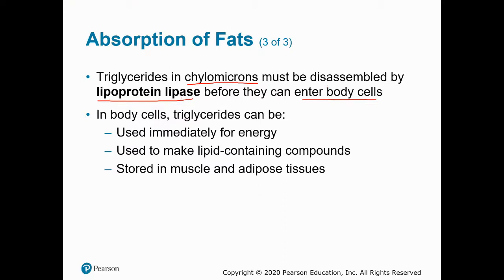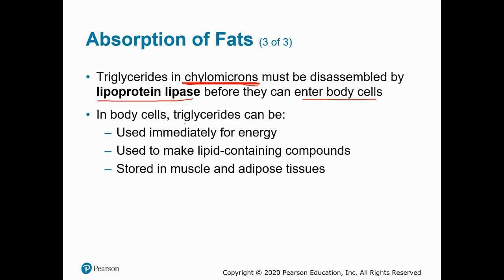Why do body cells want fat delivery? You can think of the chylomicron as like Uber for fat after a meal — delivering fat to your body cells. We need some fat, specifically triglycerides, because fat can be a source of energy. Of the three types of lipids — triglycerides, phospholipids, and sterols — triglycerides are the energy-supplying lipid. Phospholipids and sterols are much more structural.